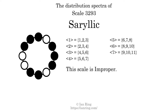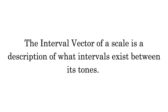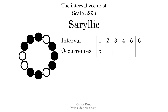The interval vector of a scale is a description of what intervals exist between its tones. There are 5 intervals with the size of 1 semitone, 4 intervals with the size of 2 semitones, and 5 intervals with the size of 3 semitones.